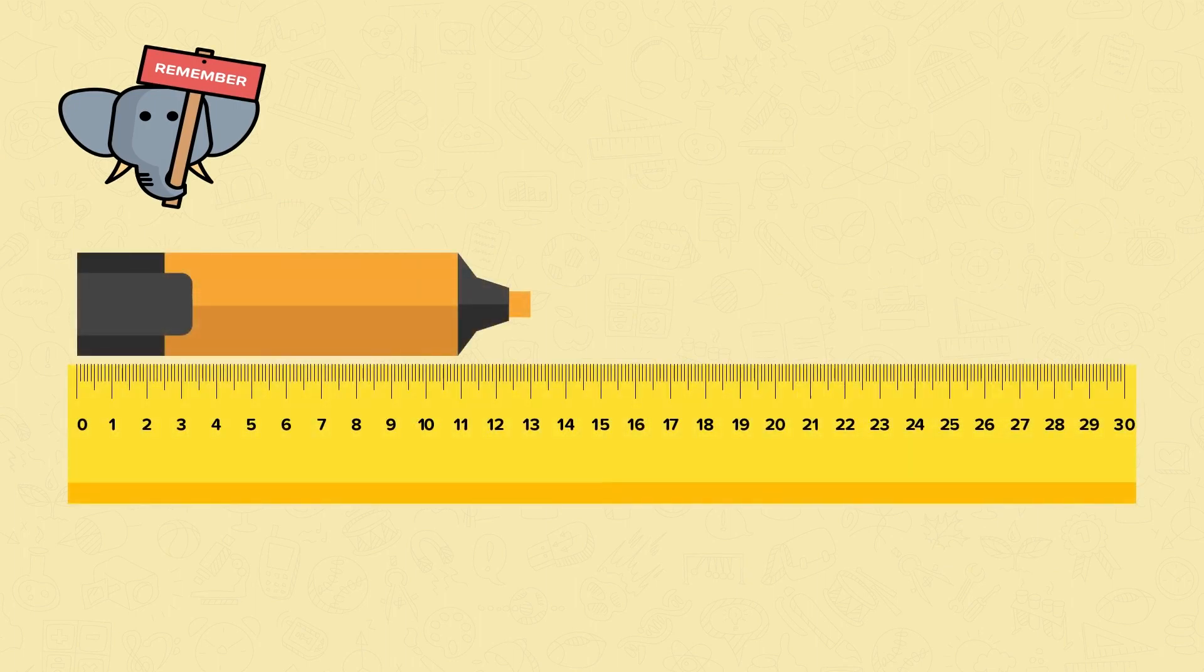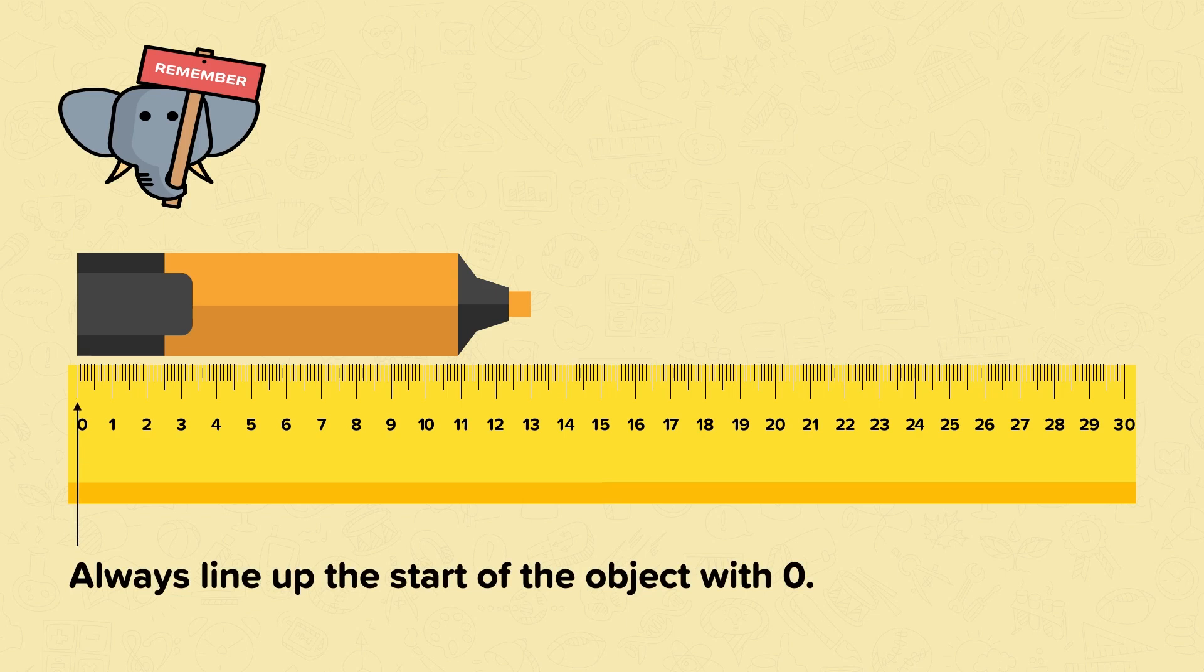So remember, when you're measuring in centimetres, always line up the start of the object with zero. Look at the other end of the object and see where it reaches on the ruler. When writing your measurement down, always include the unit centimetres. The letters CM are used to represent centimetres.